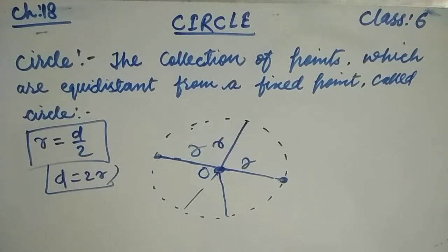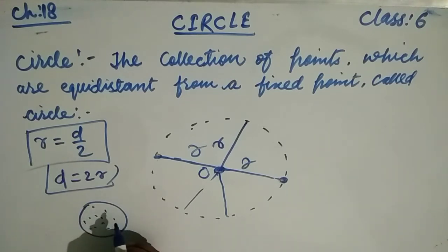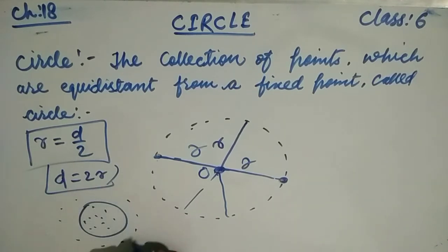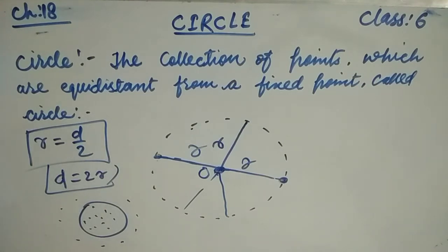Now let's discuss interior and exterior points. The points which lie inside the circle are called interior points of the circle. The points which lie outside the circle are known as the exterior points of the circle.